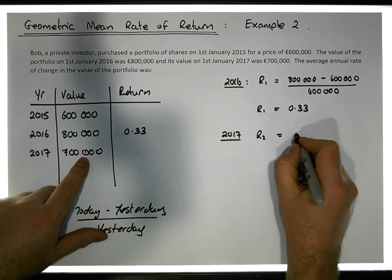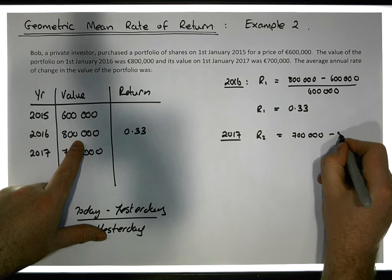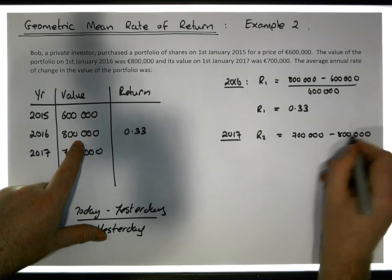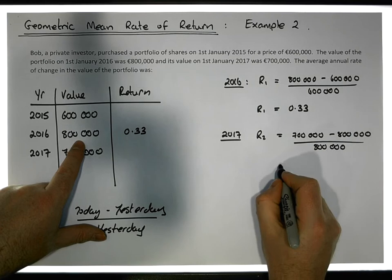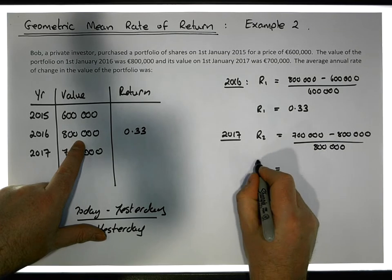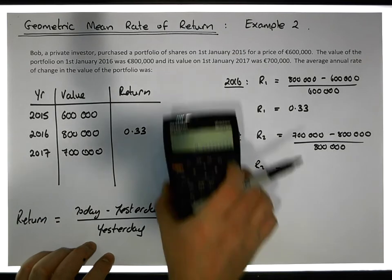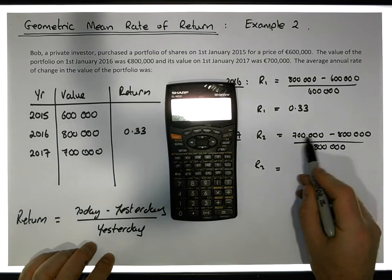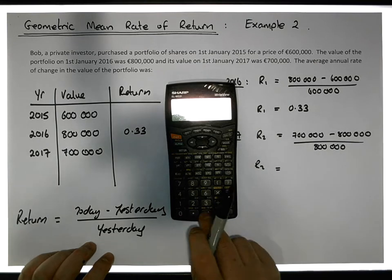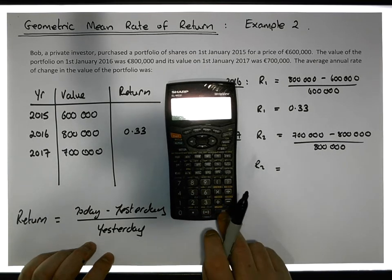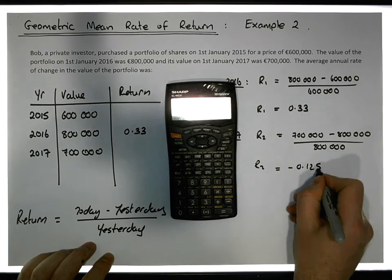Today's value, which is 700,000, minus yesterday's value, which is 800,000, all relative to yesterday's value of 800,000. You can see the change is 700 minus 800, which gives us minus 100,000 euros. That's a decrease of minus 100,000 euros relative to 800,000, which is minus 1 divided by 8, giving us a value of minus 0.125.